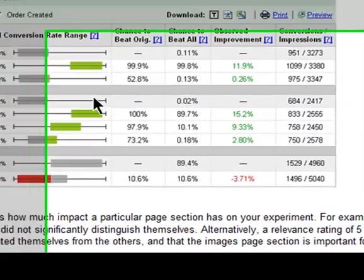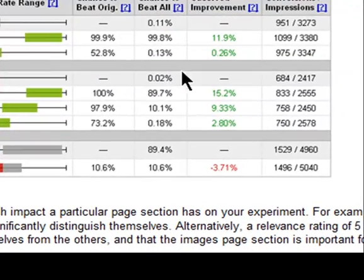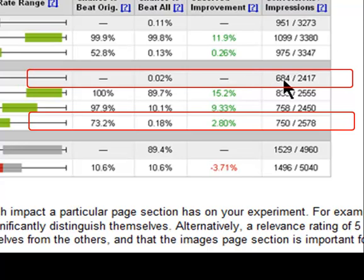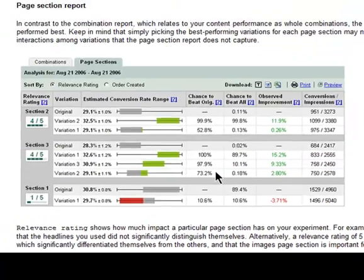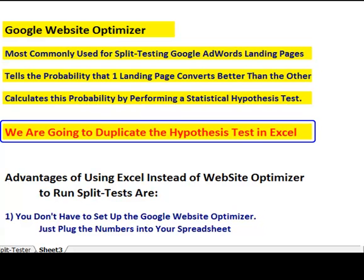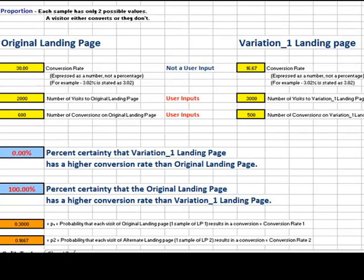Let's take a look at the typical output of the Website Optimizer. We're looking at four different landing page variations. We're going to compare the first one, the original — 684 conversions from 2,417 clicks — with Variation 1, which has 750 conversions from 2,578 clicks. The Optimizer calculates that there's a 73.2% chance that Variation 1 converts better than the original, and we're going to duplicate that hypothesis test in Excel.